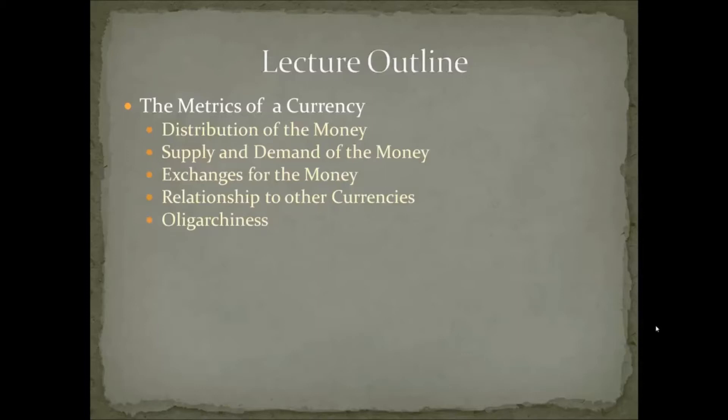For example, the distribution of the money — is the money widely spread with equal distribution amongst everyone, or is it hoarded by a small group of people? The supply and demand of the money: how much supply is there? Is there $200 million in circulation or $2 trillion? How much demand is there? How many people wish to acquire dollars because of trade?